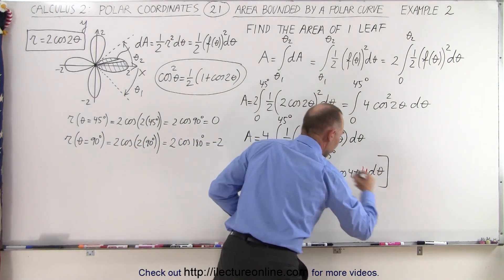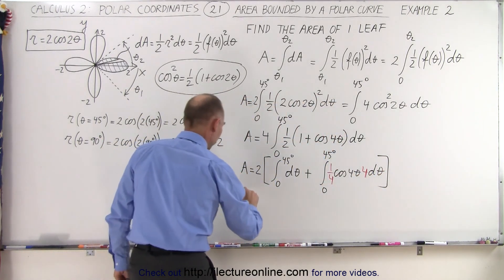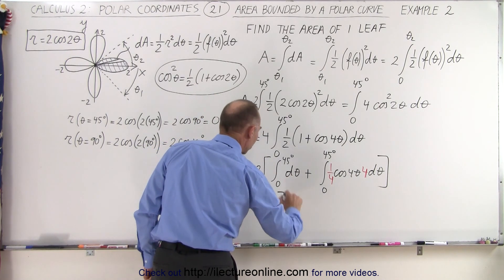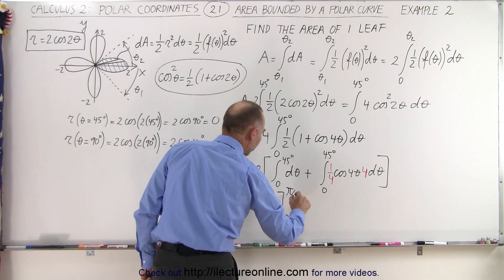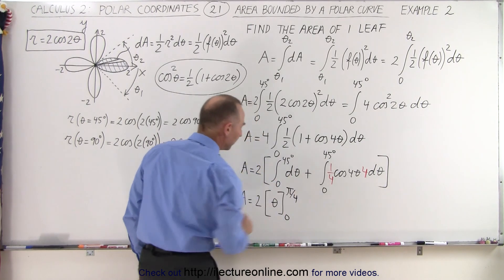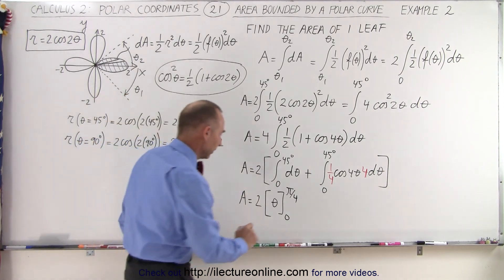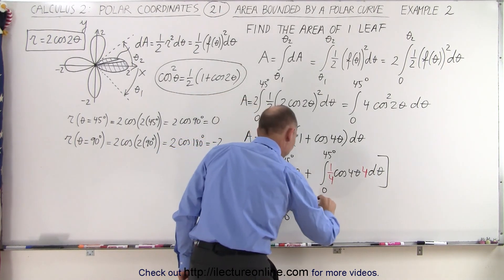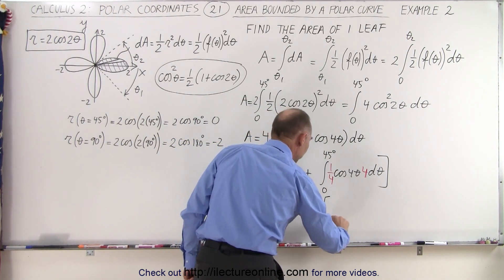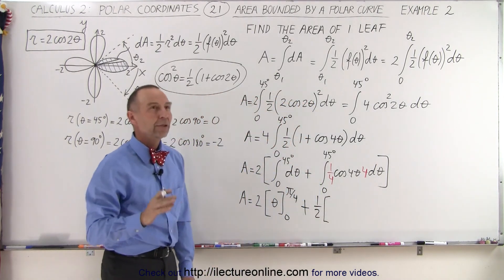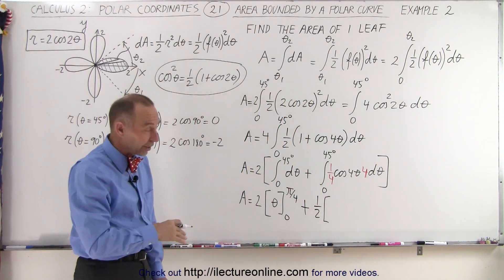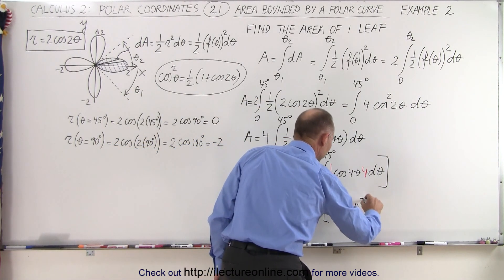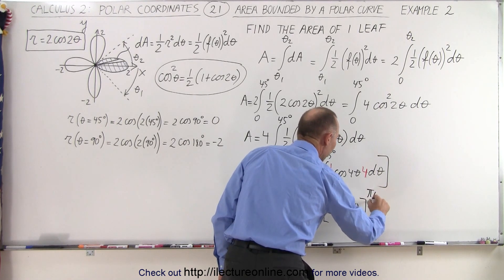Now we're ready to integrate both integrals. The area is equal to 2 times theta evaluated from 0 to 45 degrees, which is pi over 4, plus 2 times one quarter — that's one half — times the sine of 4 theta evaluated from 0 to pi over 4. Since the integral of cosine is the positive sine, we have the sine of 4 theta evaluated from 0 to pi over 4.